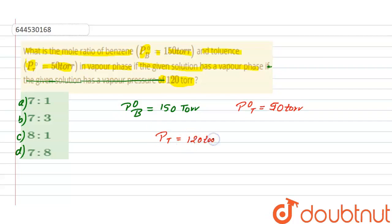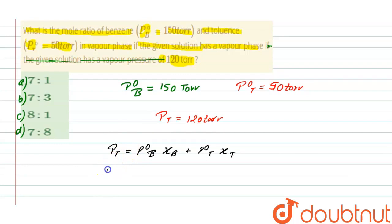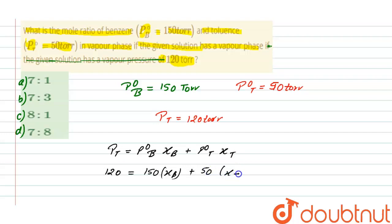From Raoult's Law, we know that P_T = P⁰_B · x_B + P⁰_T · x_T. So substituting the given values: 120 = 150·x_B + 50·x_T, where x_B is the mole fraction of benzene and x_T is the mole fraction of toluene.